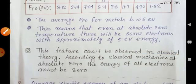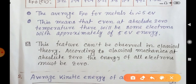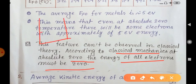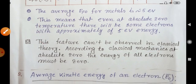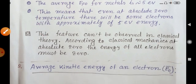This feature cannot be observed in classical theory. According to classical mechanics, at absolute zero the energy of all electrons must be zero. But quantum mechanically, there must be a certain energy level — the Fermi energy level — and electron energies range from 0 to Ef0 even at absolute zero temperature. In the next class we will discuss the average kinetic energy of an electron and the remaining parameters.